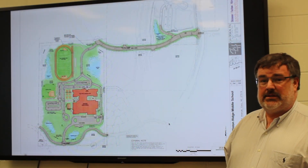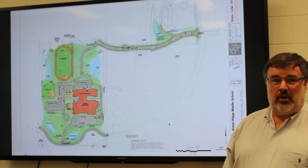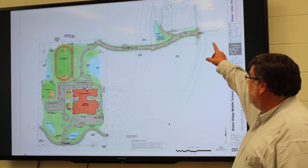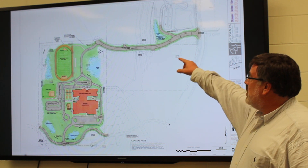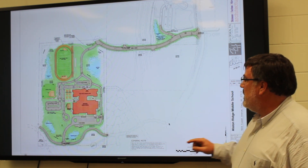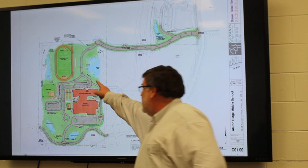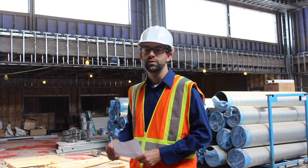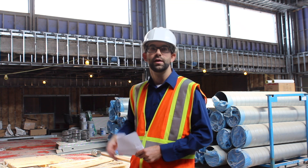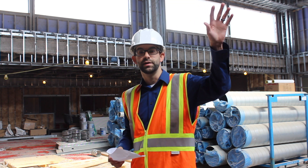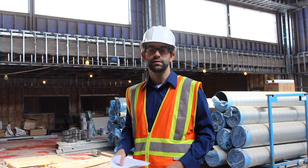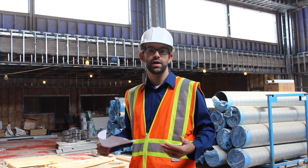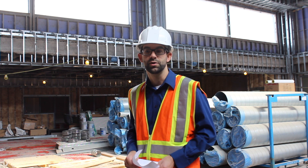This is the main floor plan for Alston Ridge Middle School. You can see the classroom wing at the top — 6th, 7th, and 8th grade stacked on top of each other. Entrance for visitors is through the main vestibule at the top. They have to check in at the administrative area so that people aren't admitted without the office knowing that they're there.